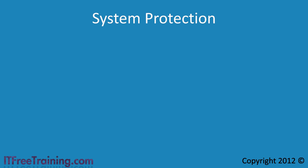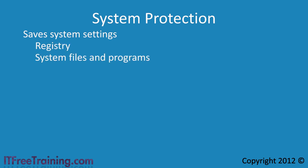System protection has essentially two components. The first saves system settings, including the registry, system files, and programs. The next part of system protection is previous versions, which saves changes to documents including when documents have been deleted. If you are familiar with previous operating systems you may have seen this feature called shadow copies or just previous versions. In this video I will look at restoring the system back to a previous snapshot. In the next video I will look at how to use system protection to restore the previous version of your documents.